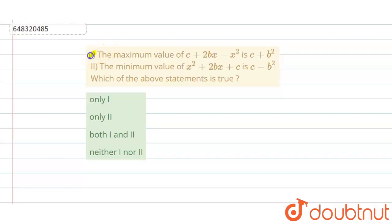In the following question, statement 1: the maximum value of c + 2bx - x² is c + b². Statement 2: the minimum value of x² + 2bx + c is c - b². Which of the above statements is true? Only 1, only 2, both 1 and 2, or neither 1 nor 2.